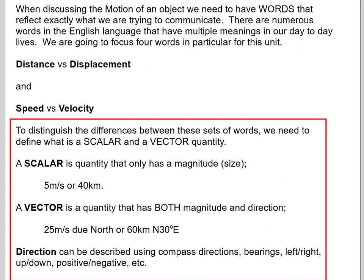So when discussing the motion of an object, we need to have words that reflect exactly what we're trying to communicate. So we're going to start our discussion here with distance and displacement, and then we're going to continue with speed and velocity. And again, in the regular day to day world, we interchange these all the time. But in our science physics world, they're going to have two different meanings.